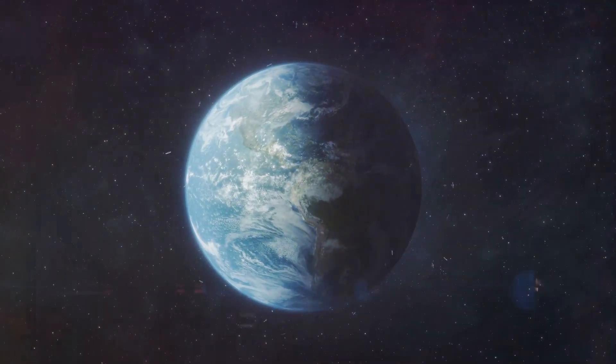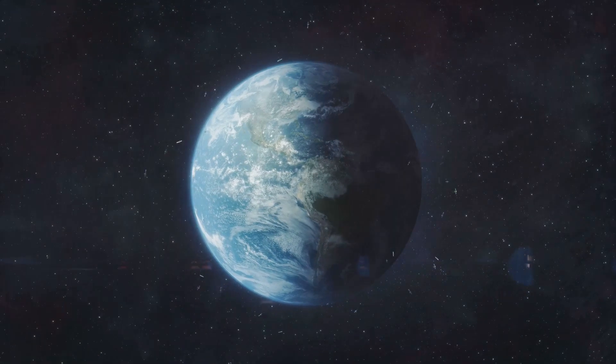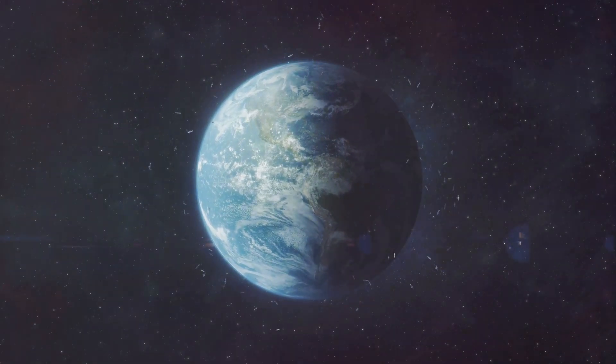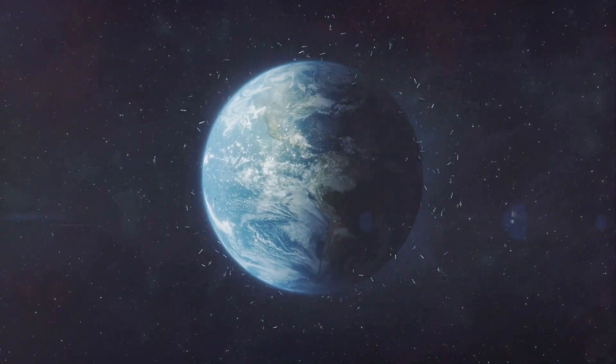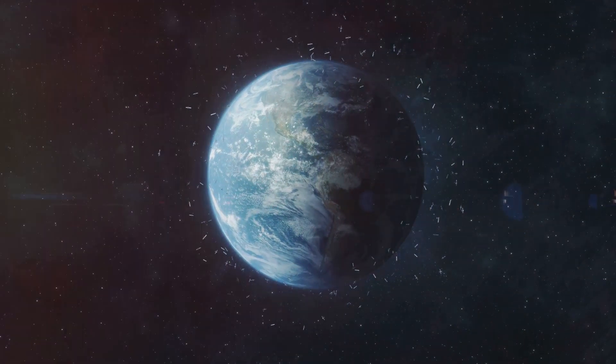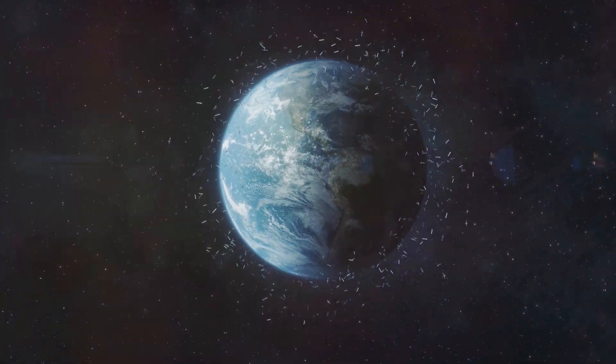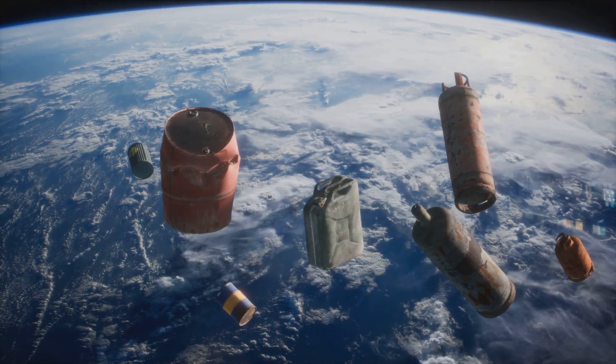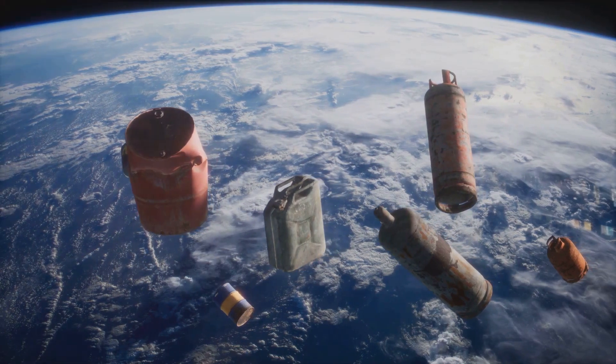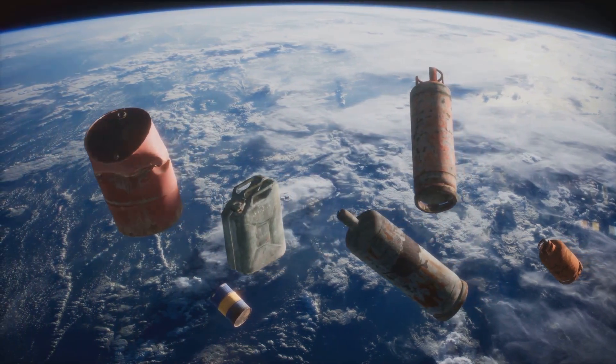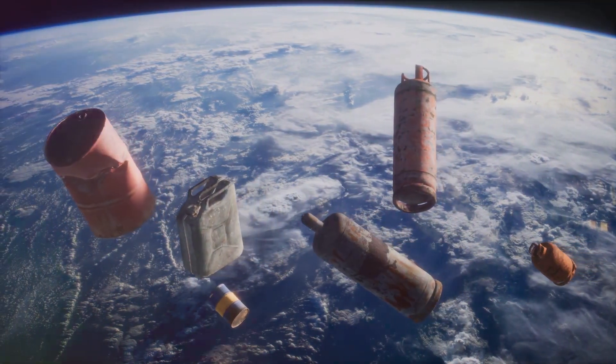The vastness of the issue is nothing short of mind-boggling. Imagine thousands of objects, from tiny fragments to defunct satellites, whirling around our planet at speeds that would make the fastest race car look like a snail. These objects aren't just lazily drifting. They're hurtling at speeds of up to 17,500 miles per hour.